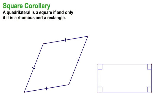The square corollary tells us that a quadrilateral must be both a rhombus and a rectangle to be a square. Now, we know both of these are, of course, parallelograms. Let's illustrate this by taking a rhombus and a rectangle and making them into squares.